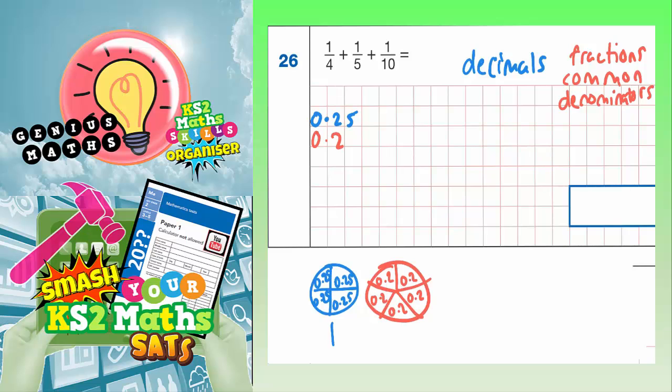And a tenth, we would actually have ten pieces in the pizza. And each one, if you split a whole one into ten pieces, you'd have 0.1 in each one. They'd all add up to one whole. Ten lots of 0.1 adds up to one whole.